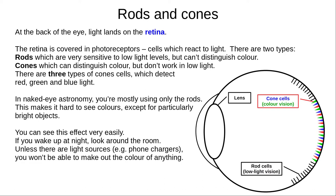At the back of the eye, light lands on the retina. The retina is covered in photoreceptors — cells which react to light and send signals to the brain. These come in two types named for their shape. Rods are very sensitive to light, making them useful in low light situations, but they can't distinguish colours. Cones can distinguish colour but need a lot of light to work, so they don't work well in low light. There are three types of cone for the three primary colours: red, green and blue.